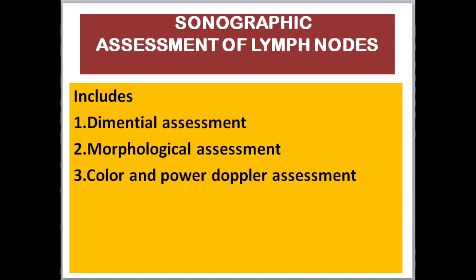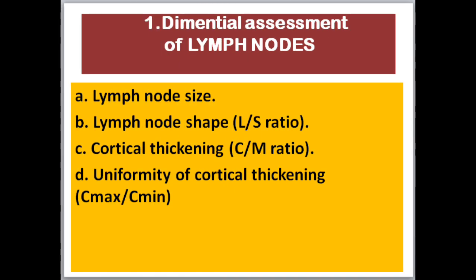Sonographic assessment includes: 1. Dimensional assessment, 2. Morphological assessment, 3. Color and Power Doppler assessment. When we talk about dimensional assessment of lymph nodes, we have to talk about lymph node size and lymph node shape, cortical thickening, and uniformity of cortical thickening.